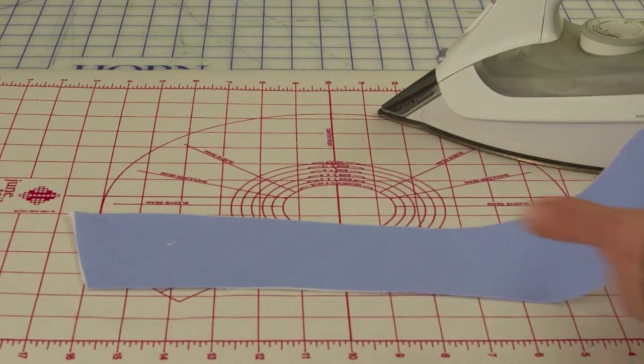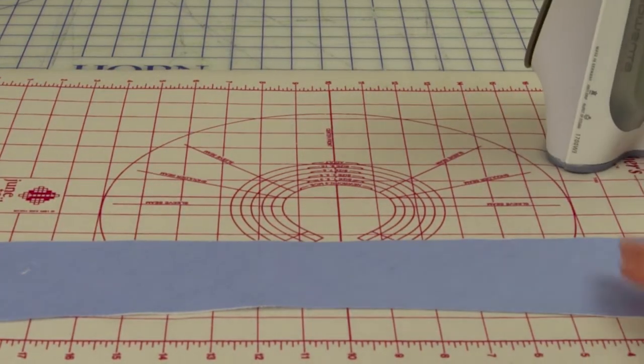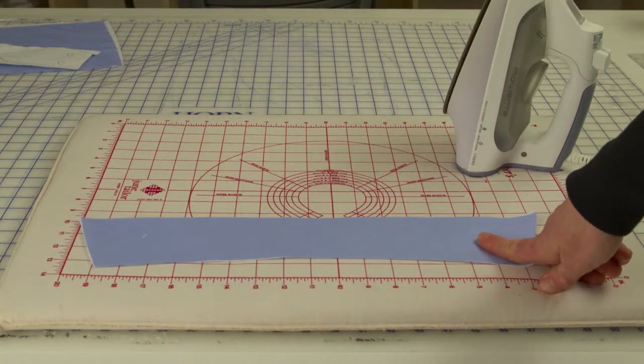Okay, so that's how I would fuse interfacing when the two pieces are cut out separately.